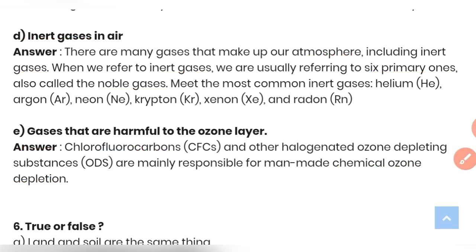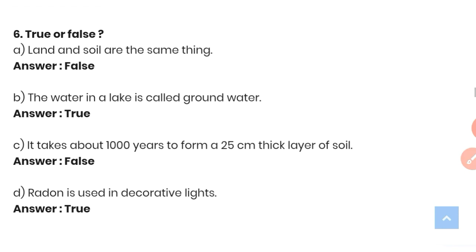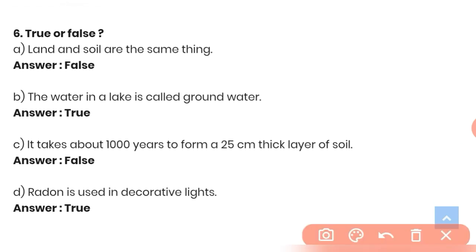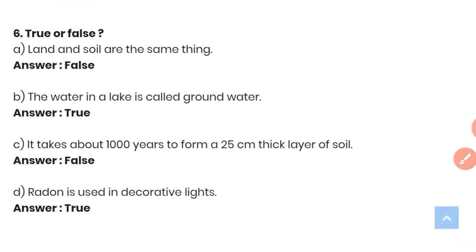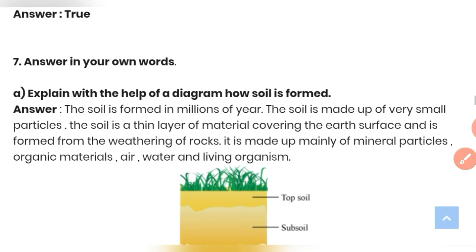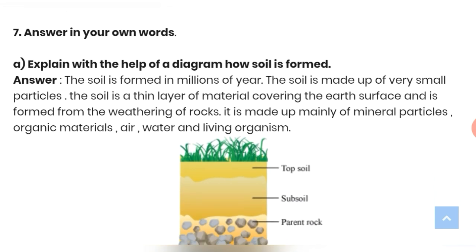True or False section: (a) Land and soil are the same thing — False. (b) The water in a lake is called groundwater — True. (c) It takes about 1000 years to form a 25 cm thick layer of soil — False. (d) Radon is used in decorating lights — True.